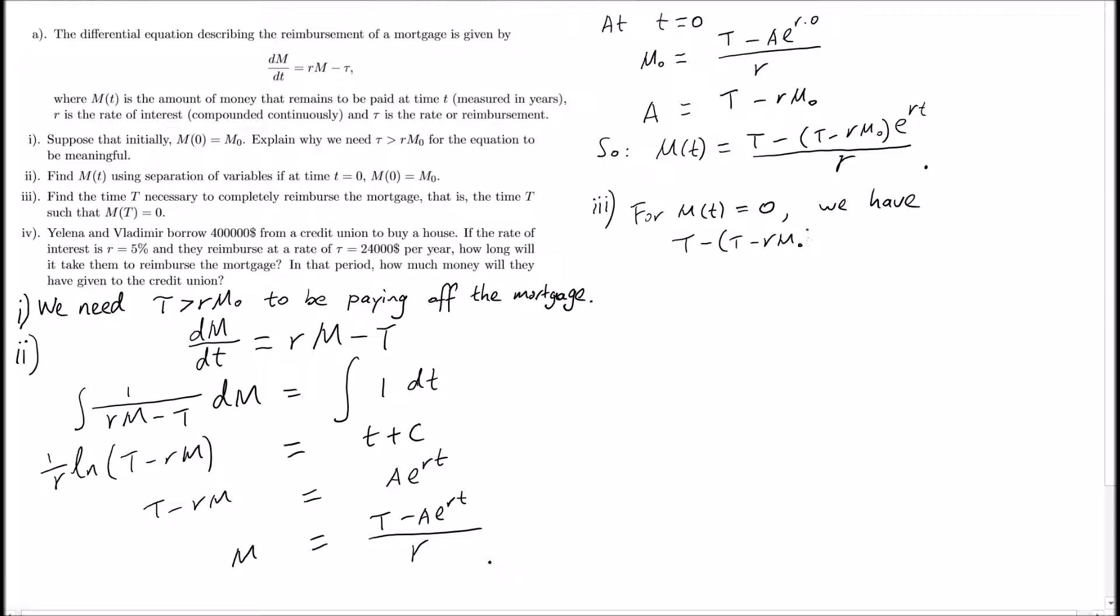We can do some rearrangement to obtain t equals (1/r)ln(T/(T - rM_0)). So that's the time it takes to pay off our mortgage.